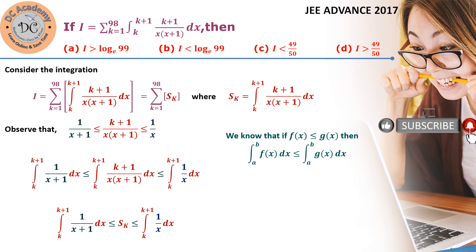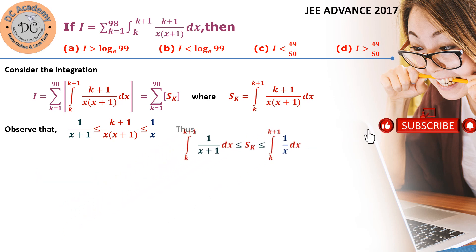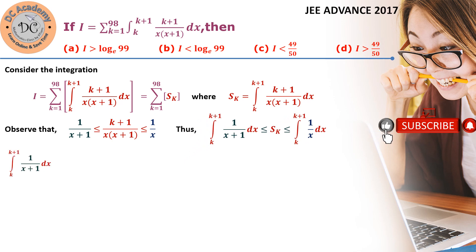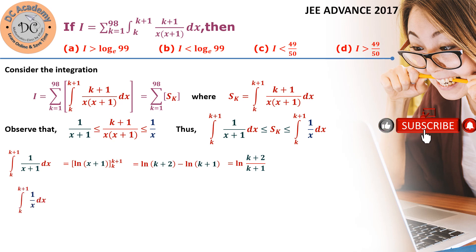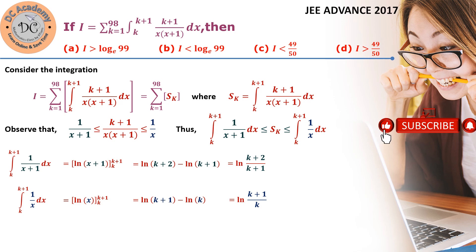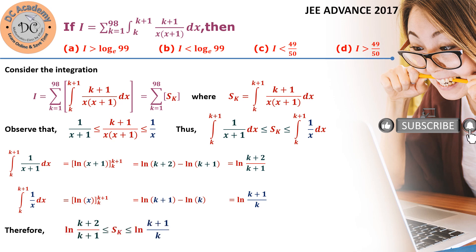We evaluate the two bounding integrals. The integral from k to k+1 of 1/(x+1) dx equals log(x+1) evaluated at the limits, giving log(k+2) minus log(k+1), which equals log[(k+2)/(k+1)]. The integral of 1/x gives log[(k+1)/k]. Hence sk lies between log[(k+2)/(k+1)] and log[(k+1)/k].